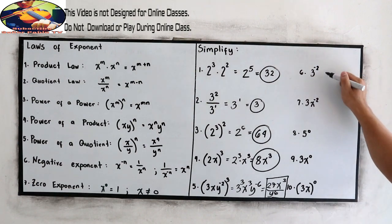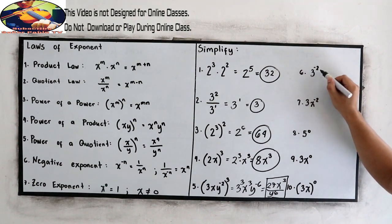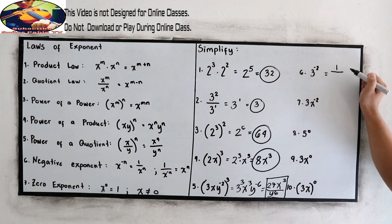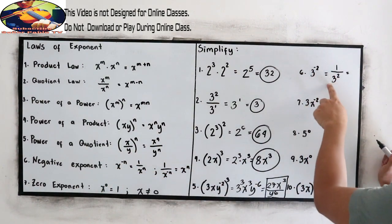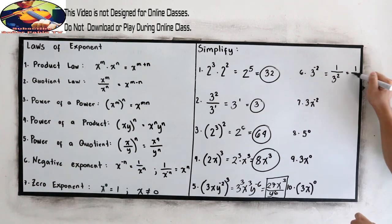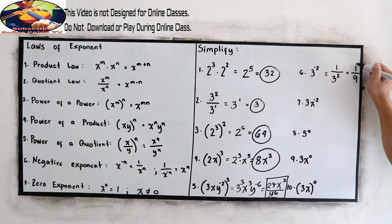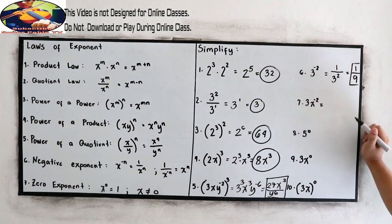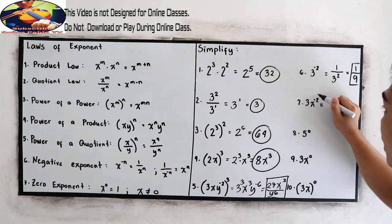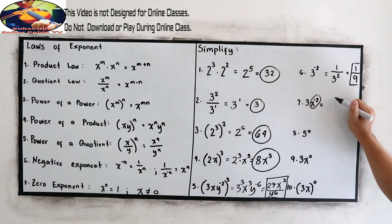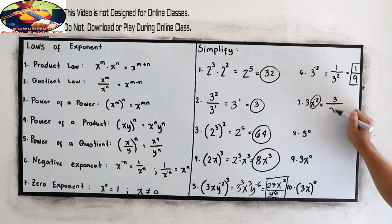Number 6: 3 raised to negative 2. Applying the negative exponent rule, that equals 1 over 3 raised to 2. Simplifying the denominator gives 1 over 9. Number 7: 3x raised to negative 2. We have a negative exponent on the variable, so that equals 3 over x raised to 2.